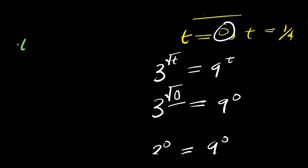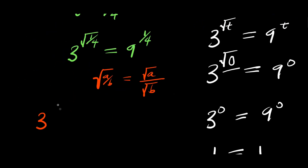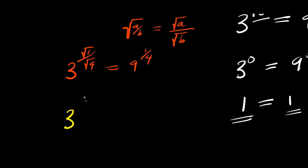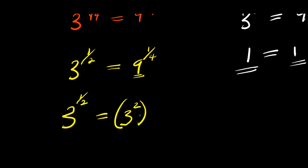Now let's consider t equals 1 over 4. I have 3 to the power of square root of 1 over 4 equals 9 to the power of 1 over 4. Square root of 1 over 4 equals square root of 1 divided by square root of 4, which is 1 over 2. So the left side becomes 3 to the power of 1 over 2. For the right side, 9 is 3 to the power of 2, so we are writing 3 to the power of 2 raised to the power of 1 over 4.